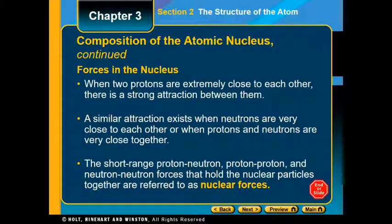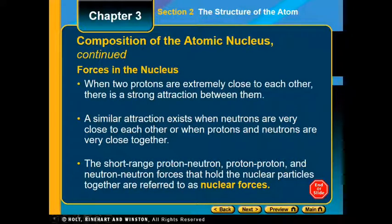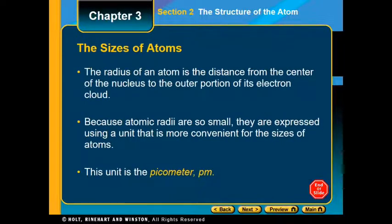Make sure you get the definition there at the bottom. It's that short range proton to neutron, proton to proton, or neutron to neutron attractive forces that are created. Finishing off our notes, just talking about the size of atoms. We do look at the radius of an atom. It is the distance from the center of the nucleus to the outer portion of that electron cloud. Because the atomic radius are so small, we express it in a unit of picometers. PM is the abbreviation for picometer.